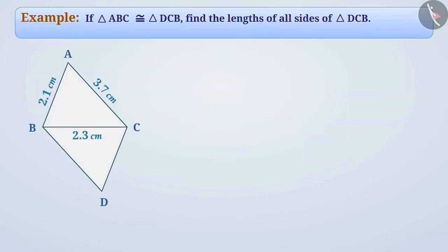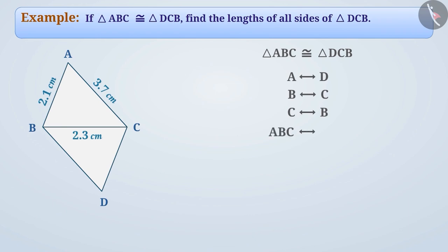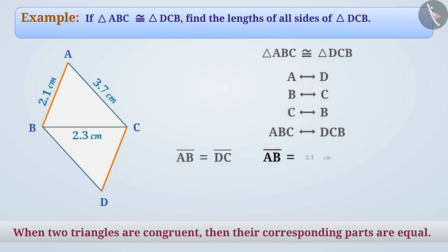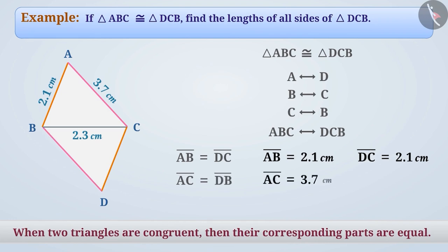Next example: if triangle ABC is congruent to triangle DCB, find the lengths of all sides of triangle DCB. Here, triangle ABC is congruent to triangle DCB, so the correspondence is ABC to DCB. When two triangles are congruent, their corresponding parts are equal. Therefore, AB is equal to DC, and since the length of AB is 2.1 cm, DC will also be 2.1 cm. And AC is equal to DB, and since AC is 3.7 cm, the length of DB will also be 3.7 cm. We are already given the length of BC, which is 2.3 cm.